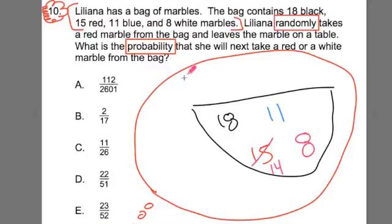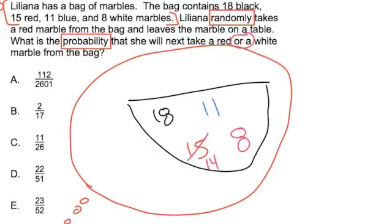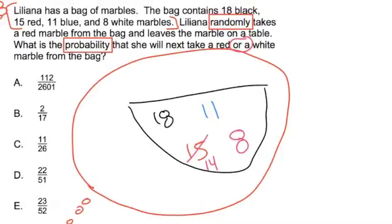And then it asks, what is the probability that it's going to be either red or white? When it says, what is the probability that the next marble is going to be red or white? Whenever it has that or, that means it's going to be simple probability, meaning we find the probability of the red marbles and we add that to the probability of the white marbles.